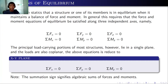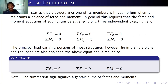The principal load-carrying portion of most structures lies in a single plane and the loads are coplanar, so the equations reduce to three equations for 2D structures in the x-y plane: summation of forces along x equals zero, summation of forces along y equals zero, and summation of moments about a point O equals zero. These signs signify algebraic sums, so forces must be reduced to their components along the x, y, and z axes.